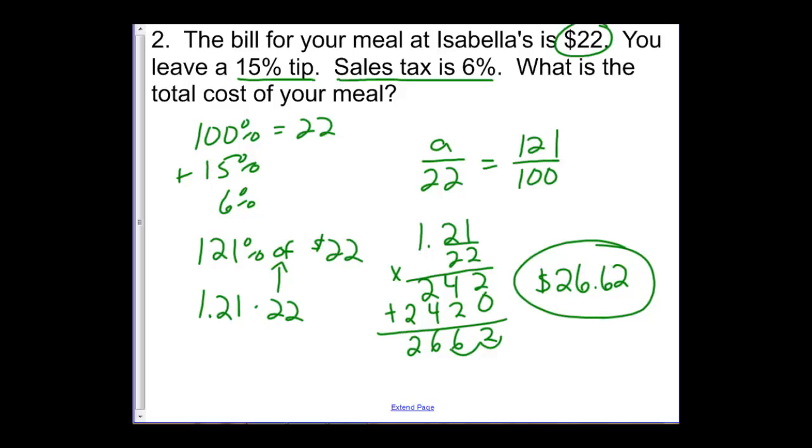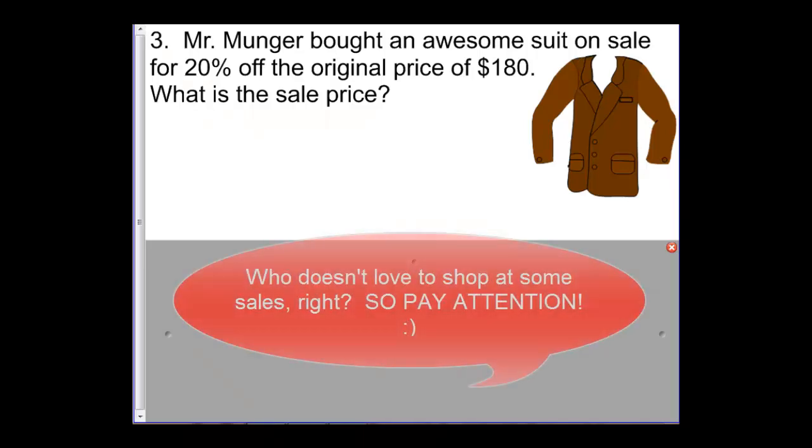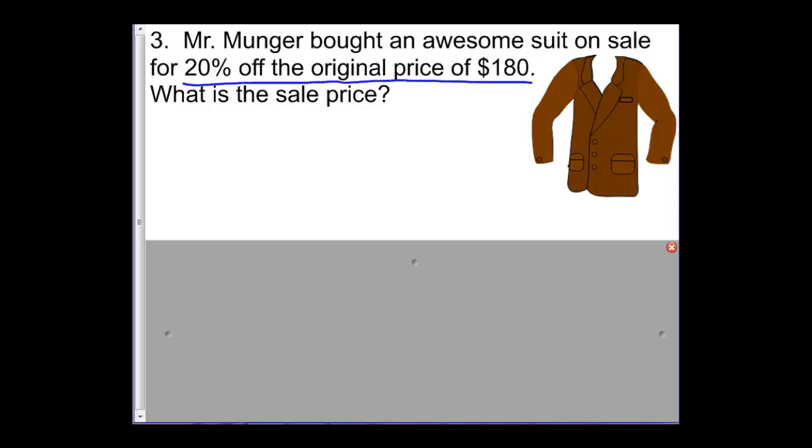We also might see a discount or sale like this. Mr. Munger bought an awesome suit. Clearly that suit is awesome. Bought an awesome suit on sale for 20% off the original price of $180. What is the sale price? Some things to think about here. If we're looking at 20% off of the original price of $180, if the sales price is 20% off, I always want to think of what that new price would be. Well, the original price is $180. That's 100%. So if it's 20% off, we would want to subtract 20%, and what we're looking for is what's 80% of $180. We want 80% for that sales price.